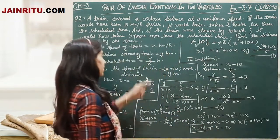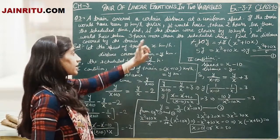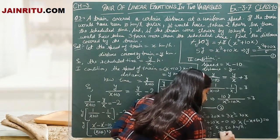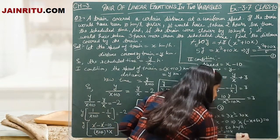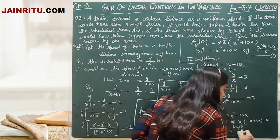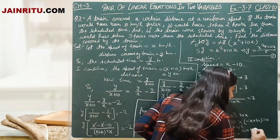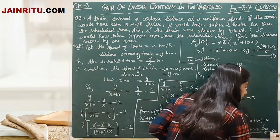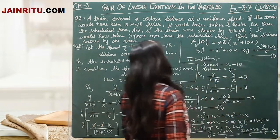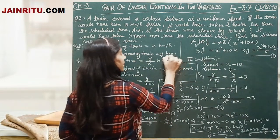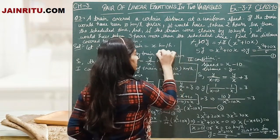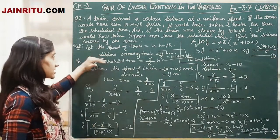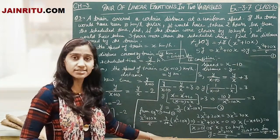Now using x equals 50 to find y: y equals x squared plus 10x upon 5, so y equals 50 squared plus 10 into 50 upon 5, which equals 2500 plus 500 upon 5, equals 3000 upon 5, equals 600 km. The distance covered by the train equals 600 km.